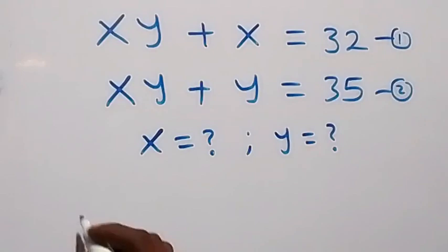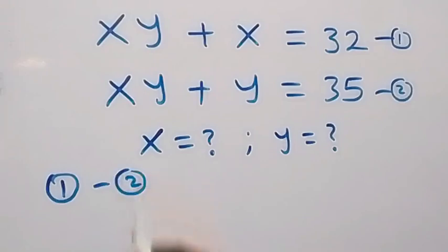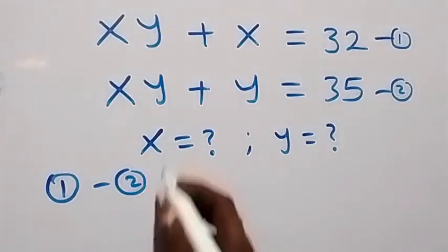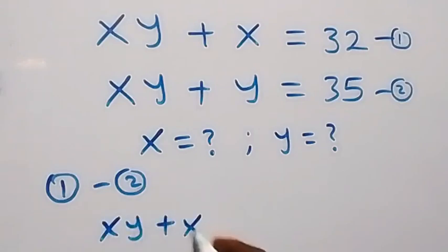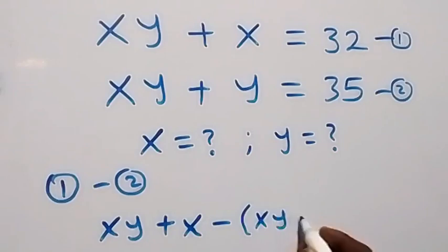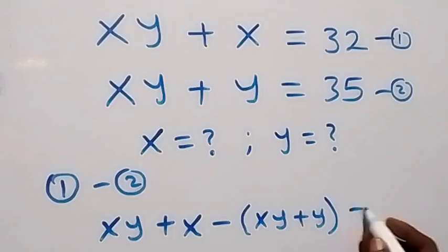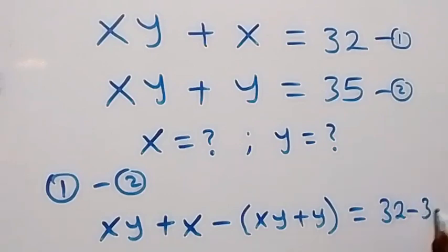Subtract equation 2 from 1. We have equation 1 minus equation 2. From the left hand side, equation 1 is xy plus x, minus the left hand side of equation 2, that's in bracket xy plus y. Equals to equation 1 that's 32, minus equation 2 that's 35.